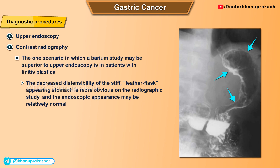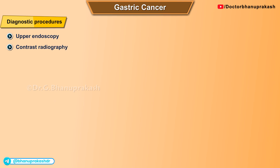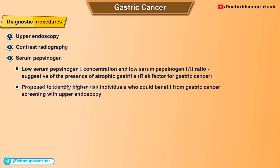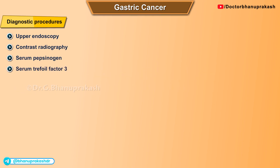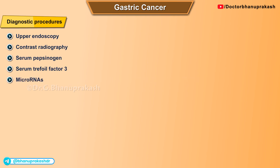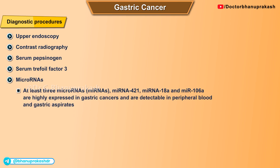Other tests include serum pepsinogen: a low serum pepsinogen I concentration and a low pepsinogen I-to-II ratio are suggestive of atrophic gastritis, a risk factor for gastric cancer. Serum pepsinogen testing has been proposed to identify higher-risk individuals who could benefit from upper endoscopy screening. Serum trefoil factor 3 is a small, stable protein expressed in goblet cells of the small and large intestine and in gastric intestinal metaplasia.